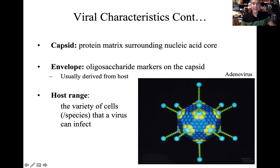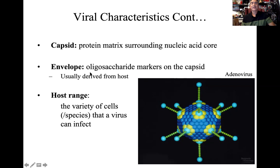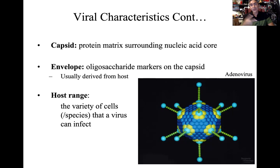The capsid — shown here in blue — is that protein shell covering around the DNA or nucleic acid core. Attached to the capsid in some viruses, but not all, we have these little extensions that comprise what we call the envelope — oligosaccharide markers on the capsid. Oligosaccharides sound like carbohydrates, and we just mentioned viruses only have two macromolecules: proteins and nucleic acids. So where do they get these carbohydrates? They don't make them on their own — they steal them from the host.